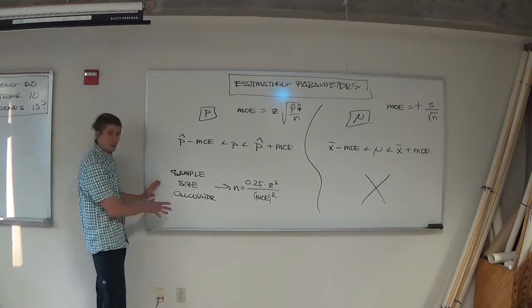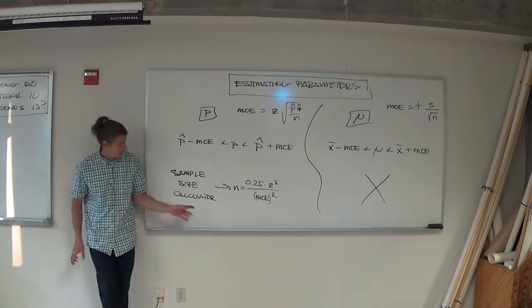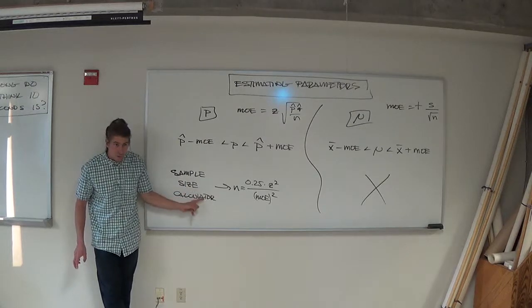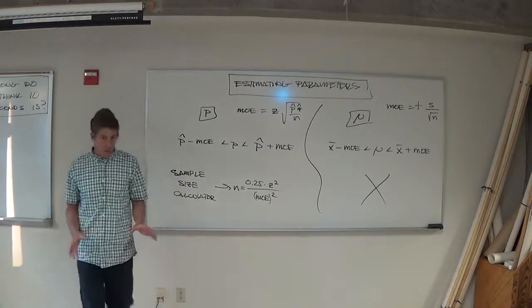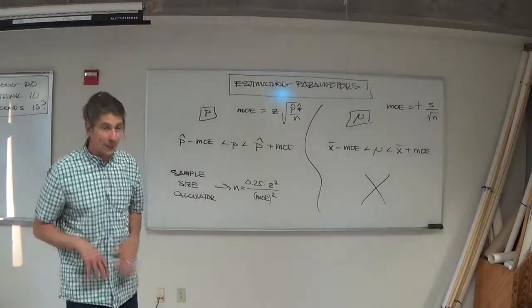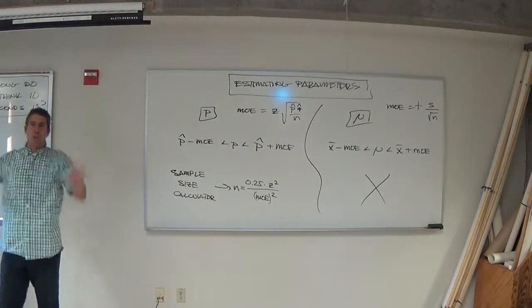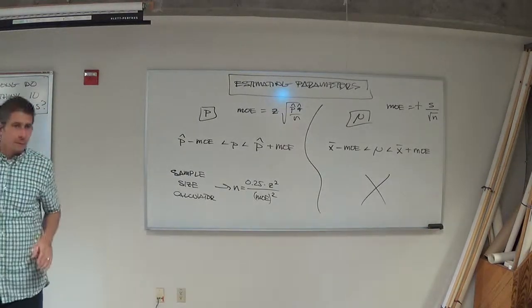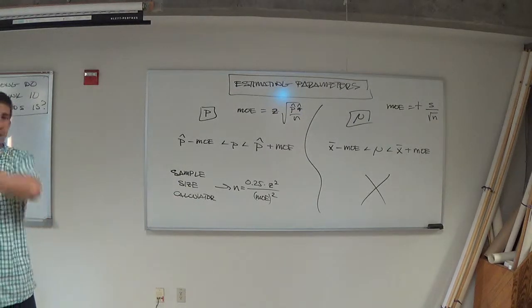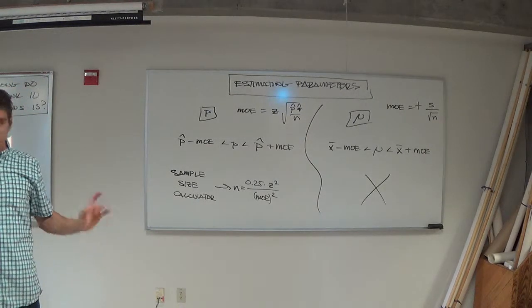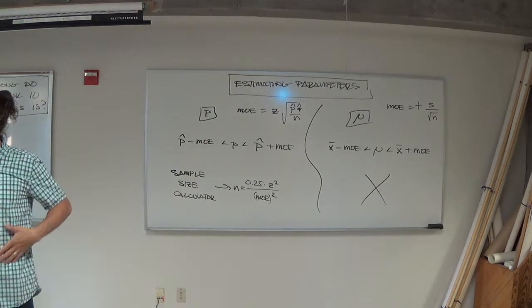I do want to say one thing about this though for those of you going into research fields. Suppose you run your sample size calculation and it tells you you need 2,000 respondents. So, you set up an experiment and you go, okay, here we go, 2,000 people. I've got 2,000 people on the roll, run the experiment. Why might you be in trouble? Realistically speaking, not statistically speaking, why might you be in trouble?